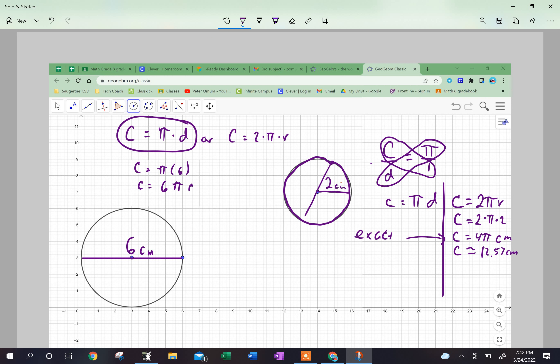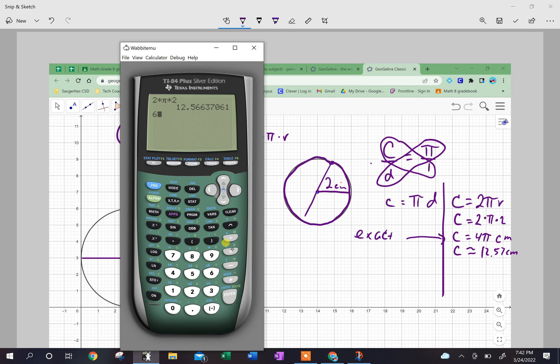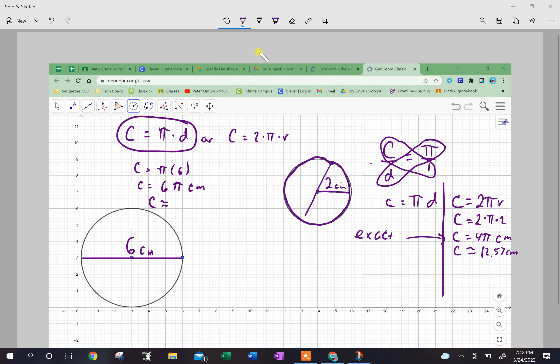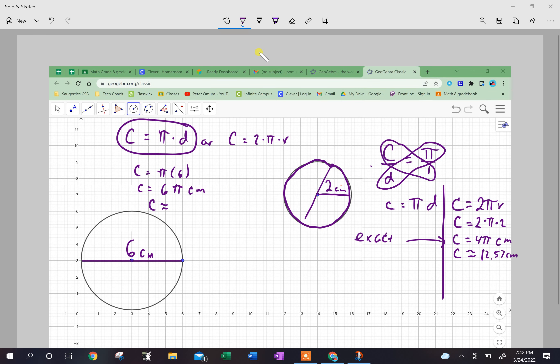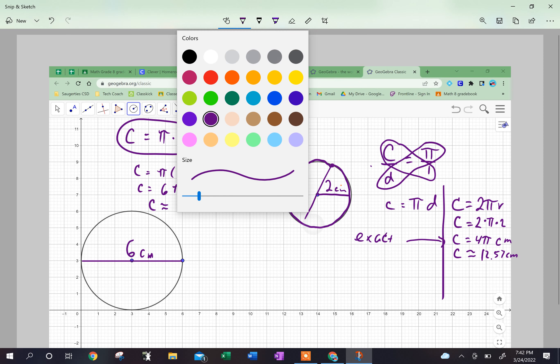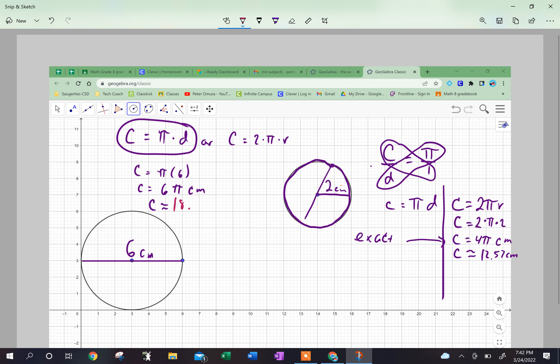So it's going to be C = π times 6, which is really 6π, and once again that's my exact answer, 6π centimeters. But if I want to find out what the approximate value is, I'm going to have to do 6 times π. Once again I'm going to round to the nearest hundredth, so I get 18.85 centimeters.